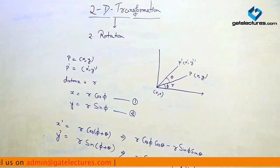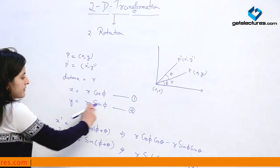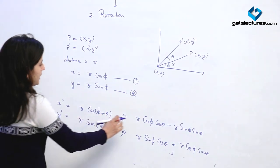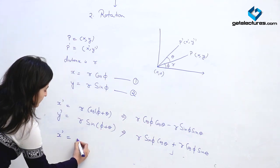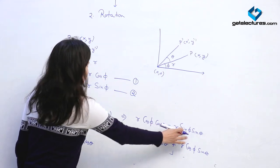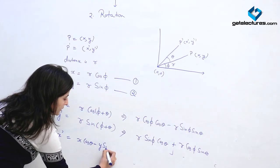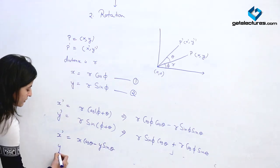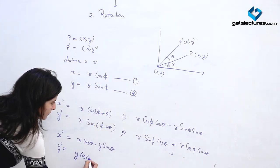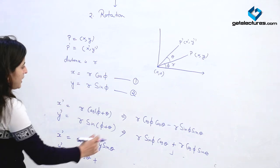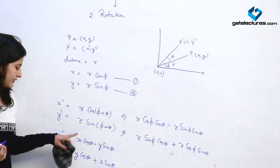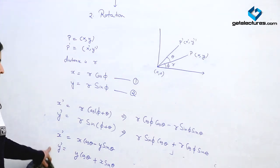From equations 1 and 2 we get the values of r cos phi and r sin phi, and we substitute them into the expanded equations. We get x dash equals x cos theta minus y sin theta, and y dash equals y cos theta plus x sin theta. These are the new coordinates of P dash.